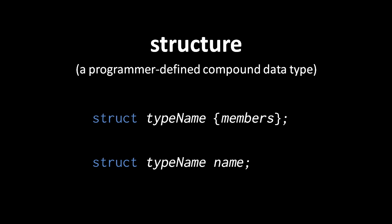In fact, it's easiest to think of the word struct as if it's part of the type name. Once we have a variable of a struct type, we can access the individual members that make up the struct with the dot operator.